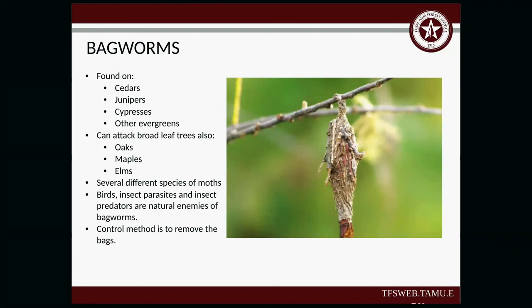Bagworms — these are found on our cedars, junipers, cypresses, and evergreens. I want to make it very clear: we do not have cedars in the state — we have juniper. Everyone calls them cedar, but that's not correct. All of what people call cedars are actually in the genus Juniperus — including Eastern red cedar. Common names lie. These can also attack broadleaf trees such as oaks, maples, and elms. Several different species of moths create these bags. Birds, insect parasites, and predators are natural enemies of bagworms. The control method is simply to remove the bags.